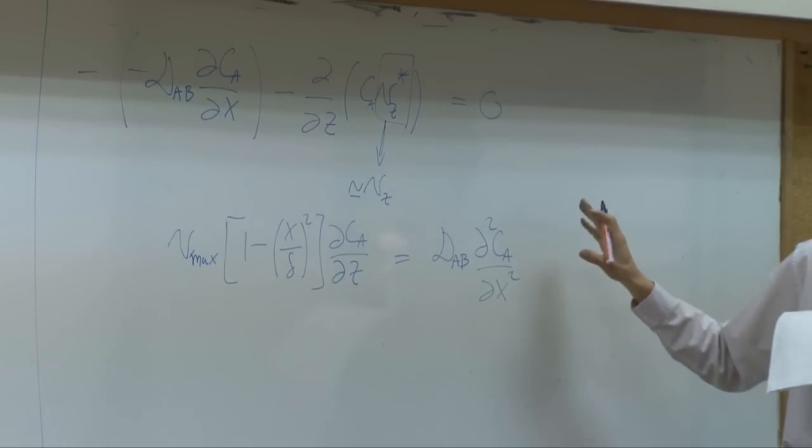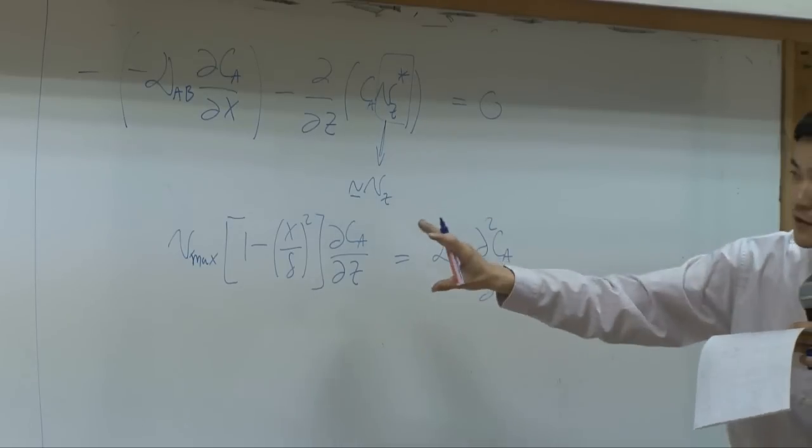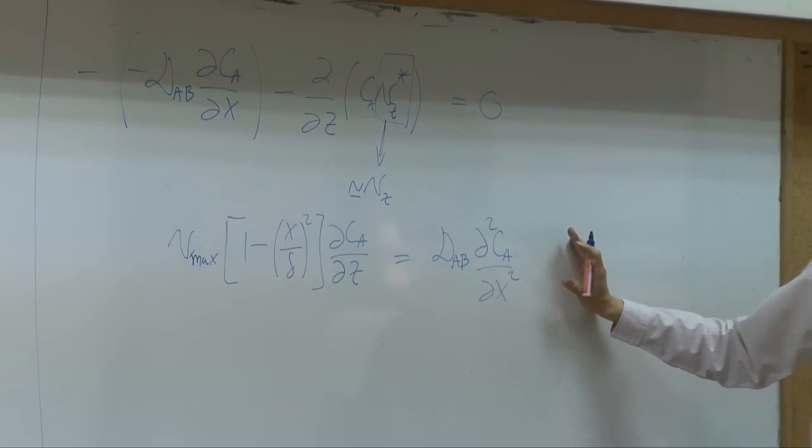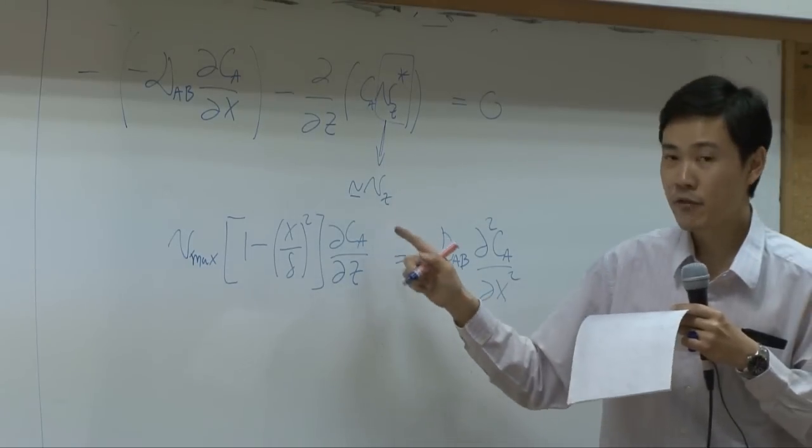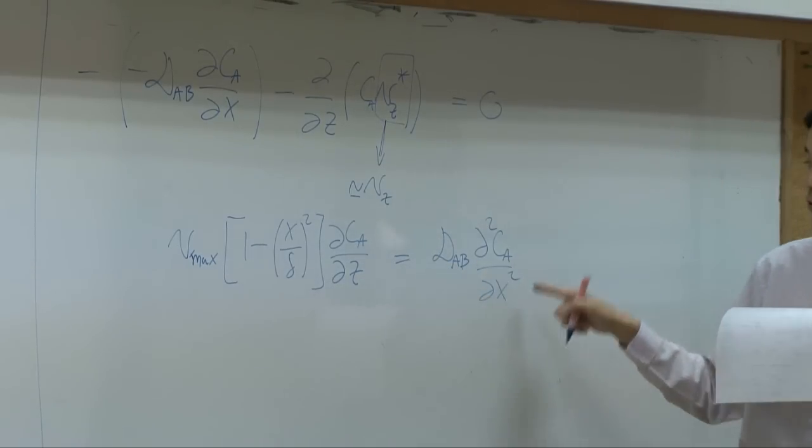Now, just for our interest here, if you have this equation, how many boundary conditions do we need? Three: one with respect to z, two with respect to x.